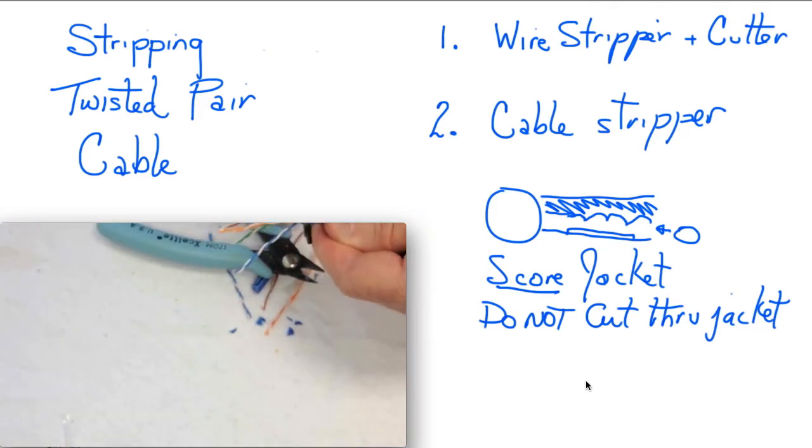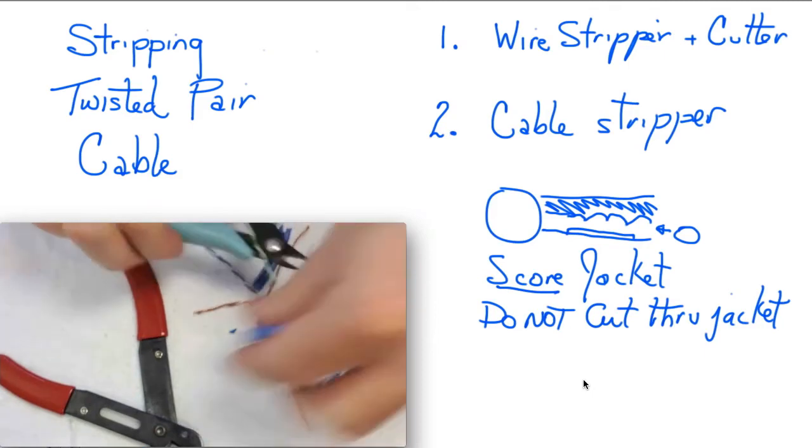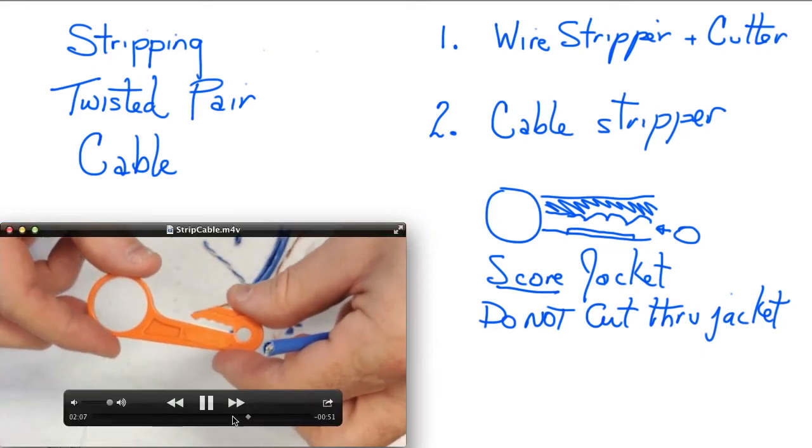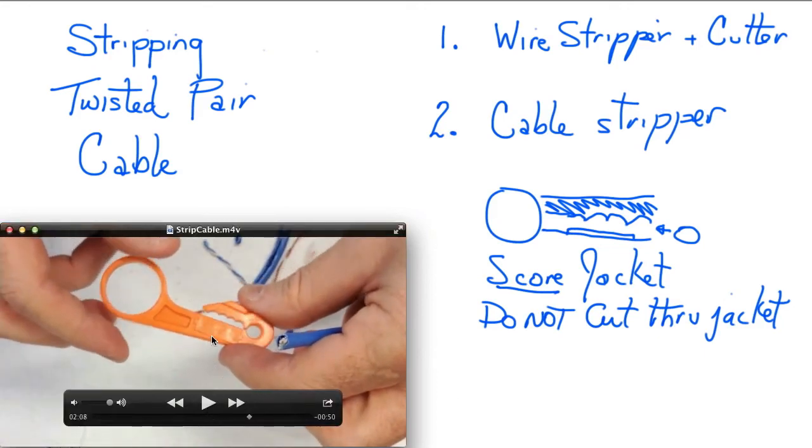Okay, so we're going to cut this off and we're going to look at the second type of method that you can use for stripping cable. And so this is the stripper right here. And so one of the things you'll notice here is that there are a number of different indentations depending on the size of the jacket. And generally you should use the largest possible.